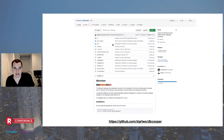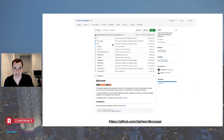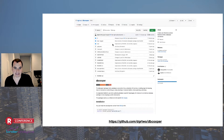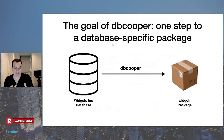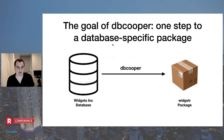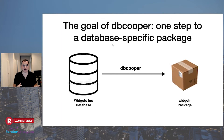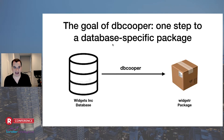I've done the same thing at a couple of companies since, and I realized I have a particular philosophy for turning a database into a package that really anyone can apply. So I'm excited to share the DB Cooper package, which is available on GitHub in the development version — it takes any database and turns it into a database-specific package for your company, open source project, or nonprofit.